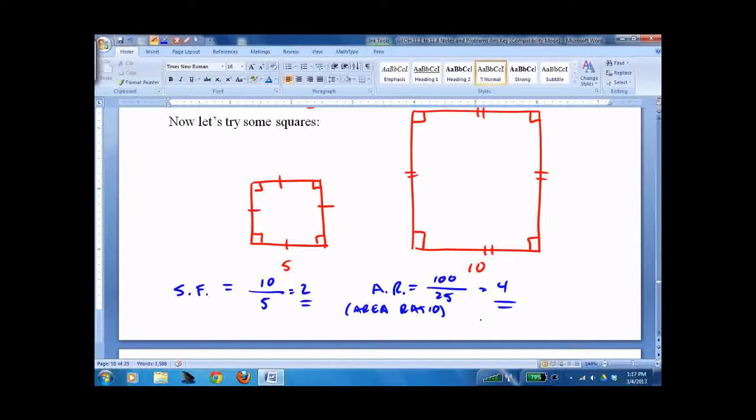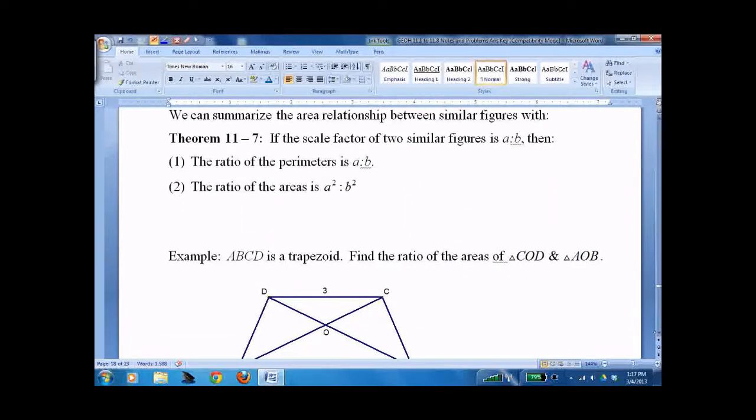That's how scale factor and area ratio are related. This is pretty easy. It gets a little more complicated next unit when we get into volume, but for area it's not too bad. Double the scale factor, square the area. Triple the scale factor, multiply by 9 the area. Here it is written down very nicely. This is the scale factor, this is the area ratio.